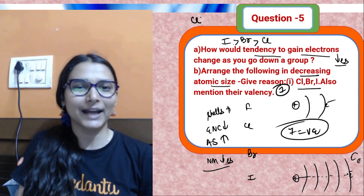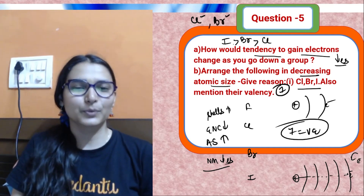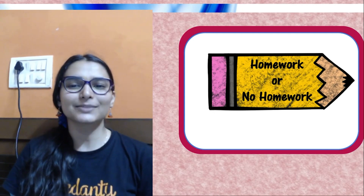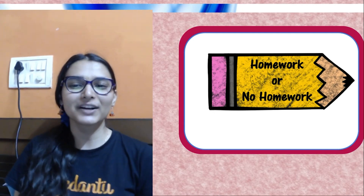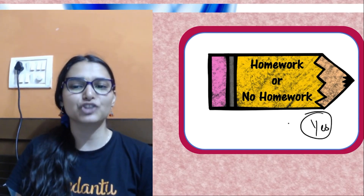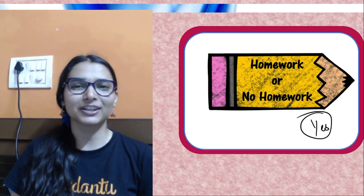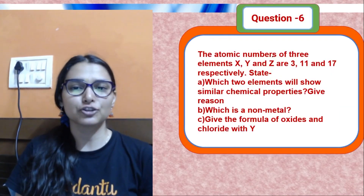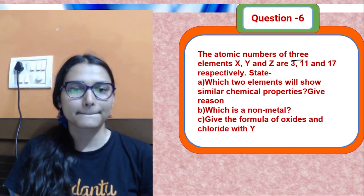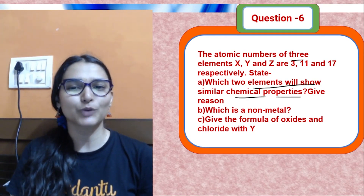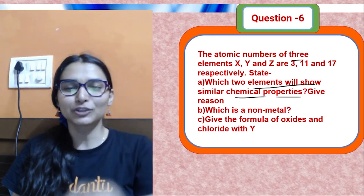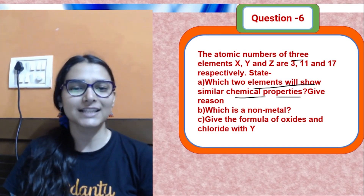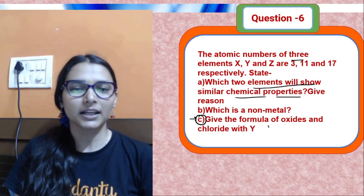Do you want homework? If yes, answer this in the comments: the atomic numbers of three elements are given — state which two will show similar chemical properties (hint: same group = similar chemical properties), which is a non-metal, and write the formulae of oxides and chlorides. Give the answer in the comment section.